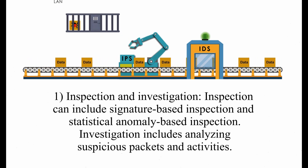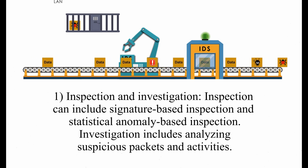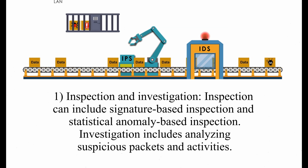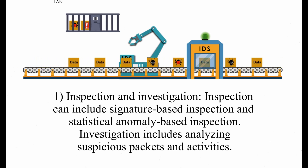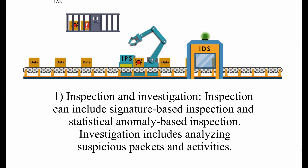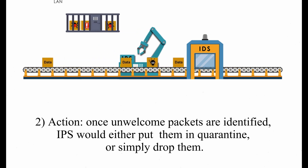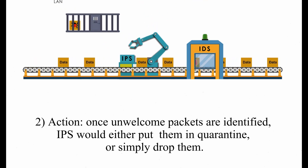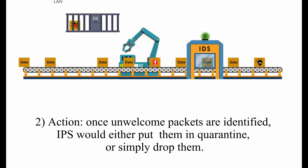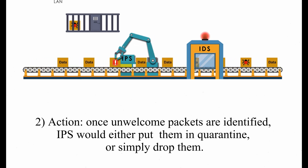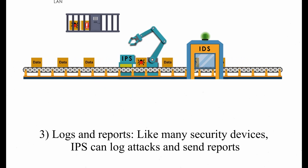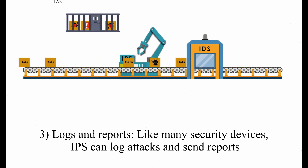One: inspection and investigation. Inspection can include signature-based inspection and statistical anomaly-based inspection. Investigation includes analyzing suspicious packets and activities. Two: action. Once unwelcomed packets are identified, IPS would either put them in quarantine or simply drop them. Three: logs and reports. Like many security devices, IPS can log attacks and send reports.